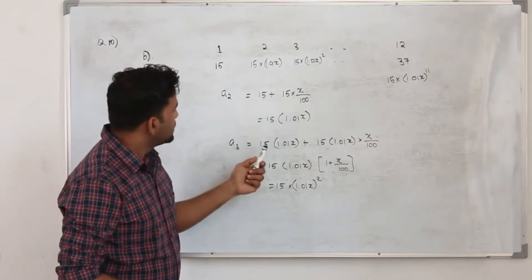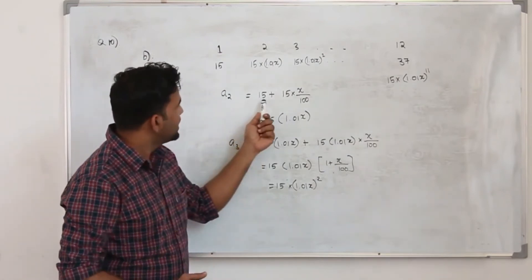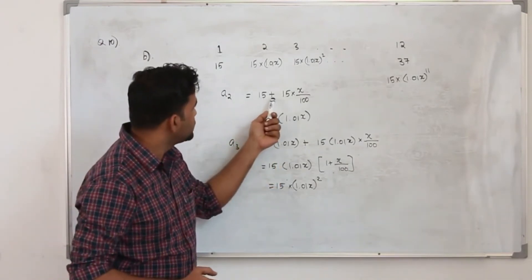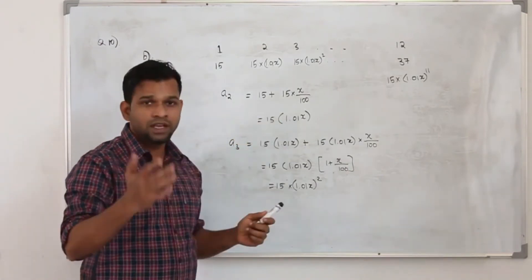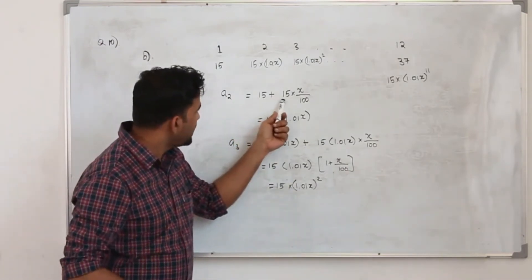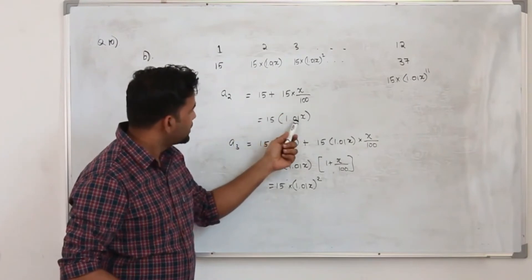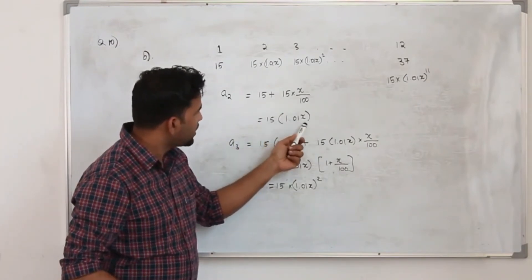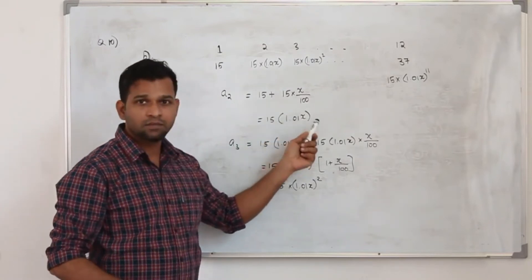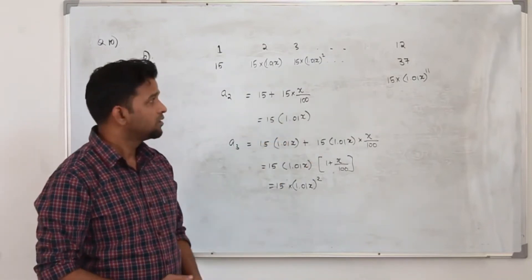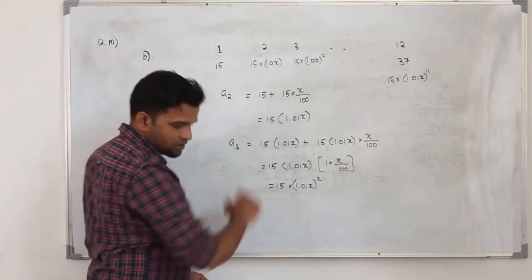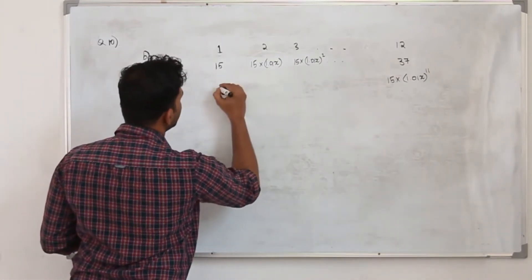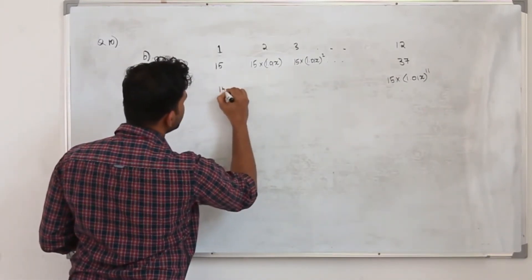So whenever the initial value is increased by a certain percentage, you use 1 plus x/100 as the multiplier. If it is decreased, you use 1 minus x/100 instead. This common ratio r is what drives the geometric sequence.